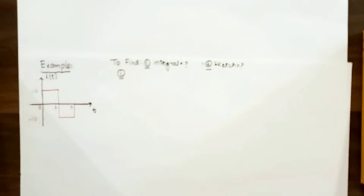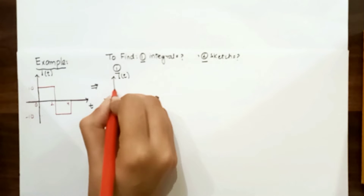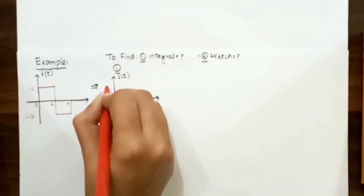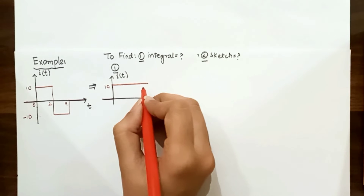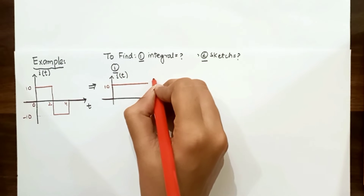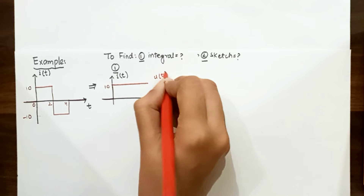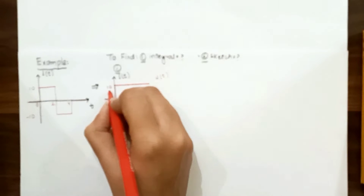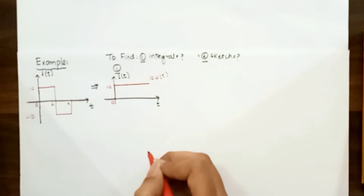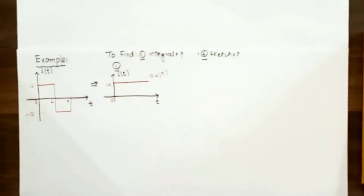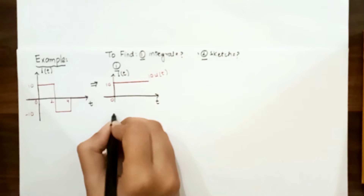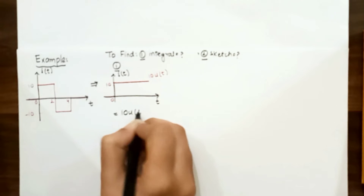The integral of a unit step function will give us a ramp function. Let's split this function to find the value of current i(t). At t equal to 0 the function value goes to 10 — this part shows a unit step function. Its amplitude is not 1 but has a value of 10 on the y-axis, so we multiply u(t) by 10, giving us 10·u(t).